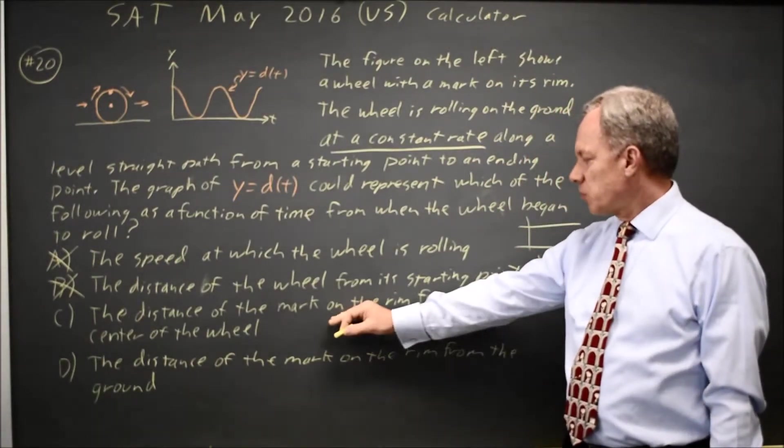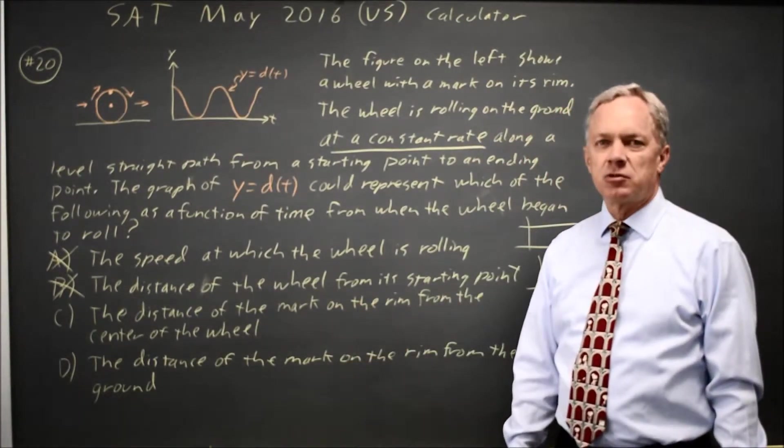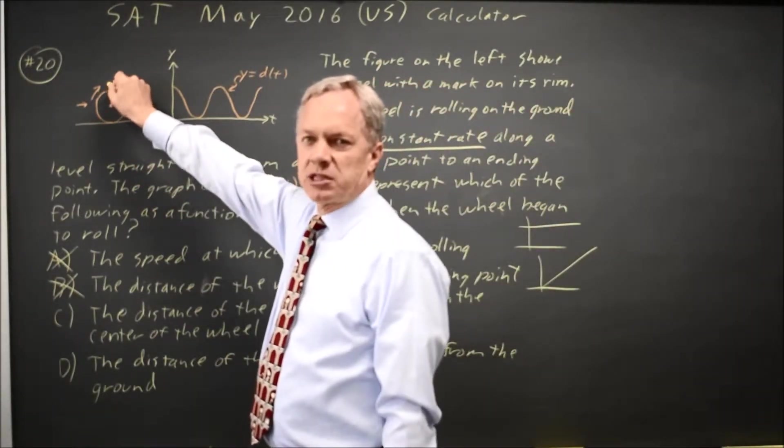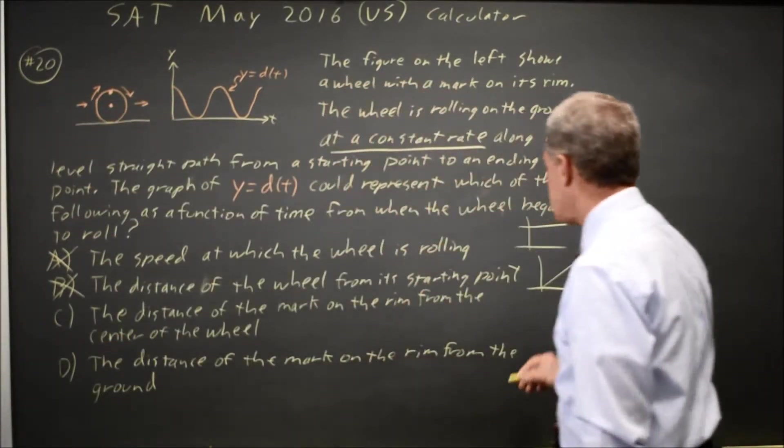Choice C is the distance of the mark on the rim from the center of the wheel. But the mark on the rim is a fixed distance from the center of the wheel, so that should also be a constant graph.